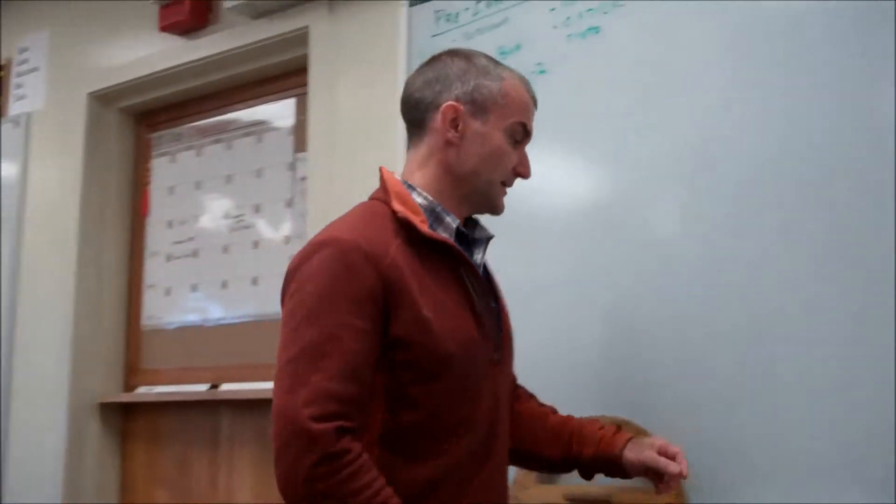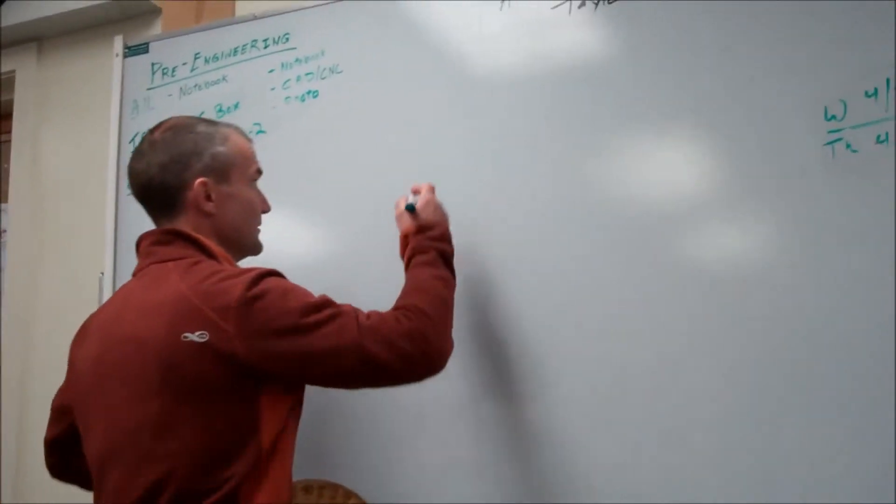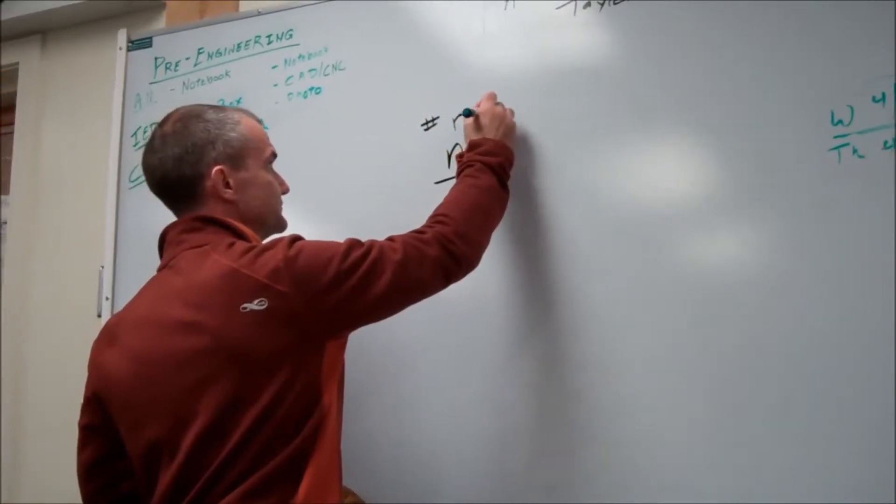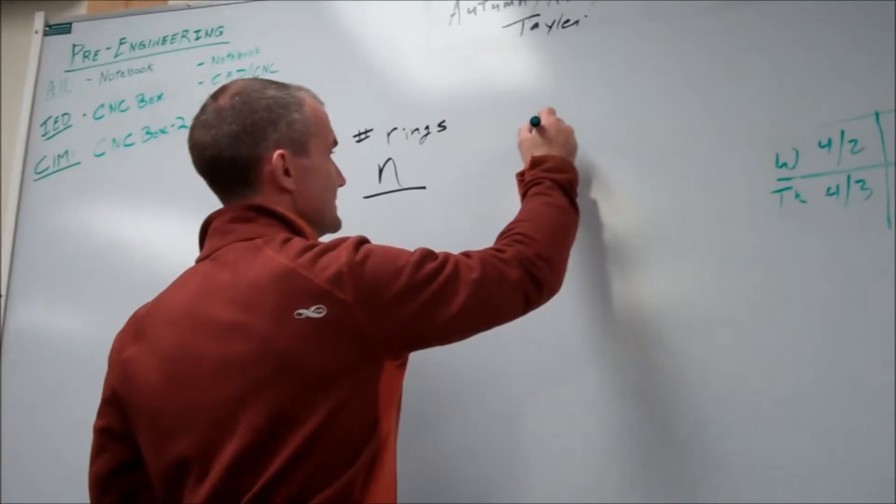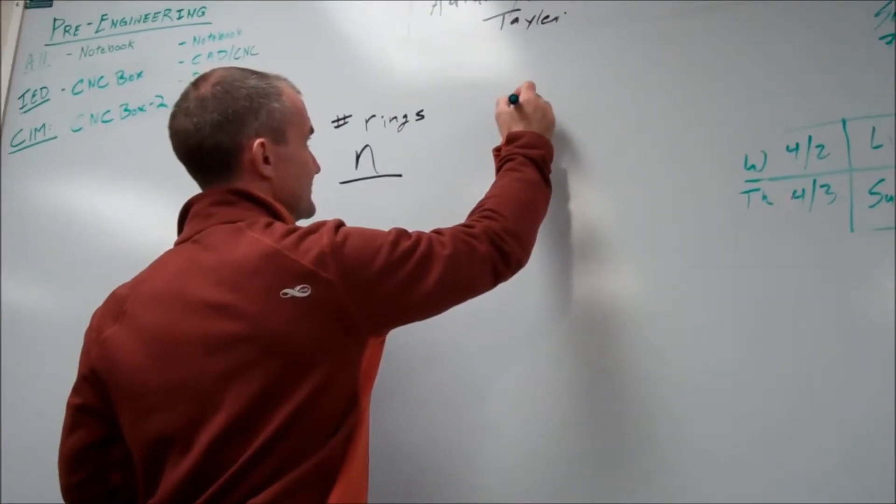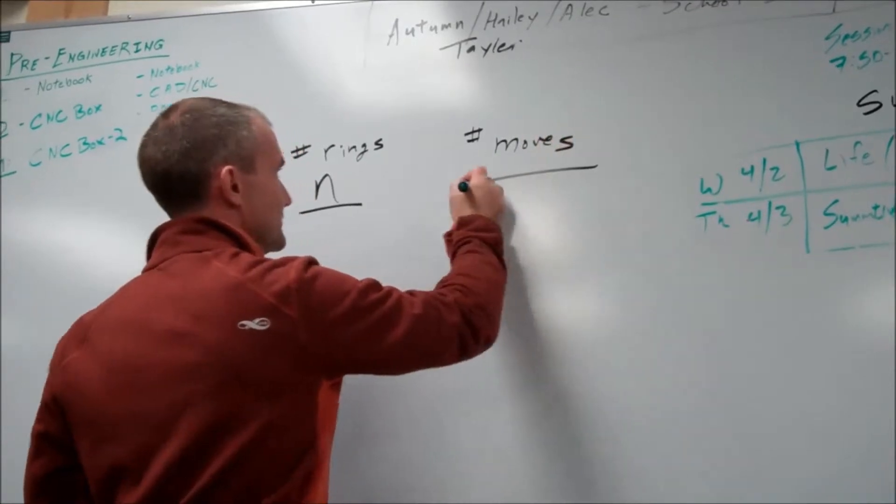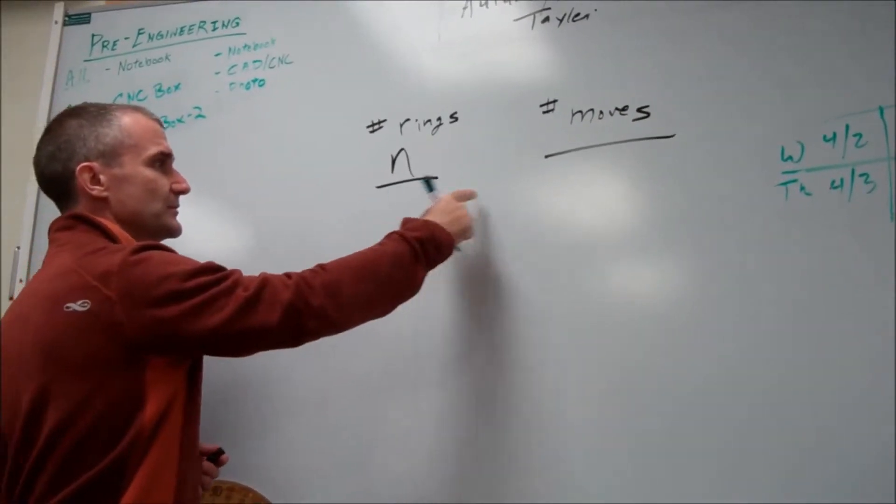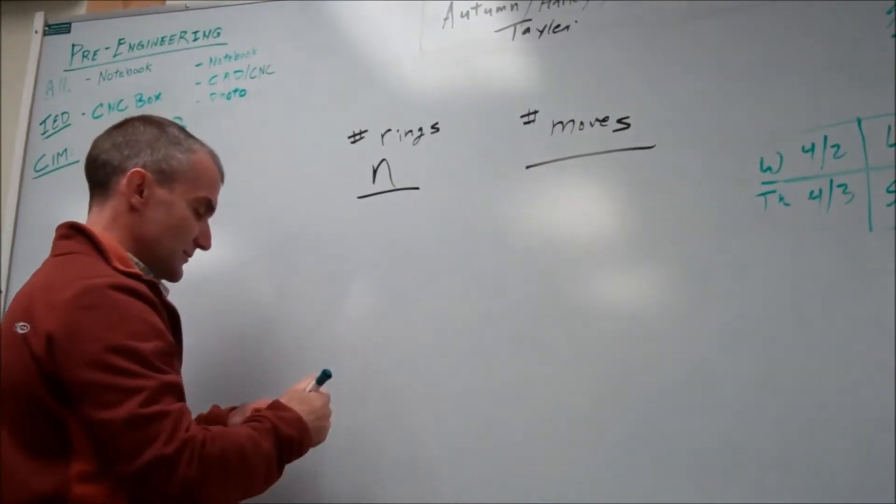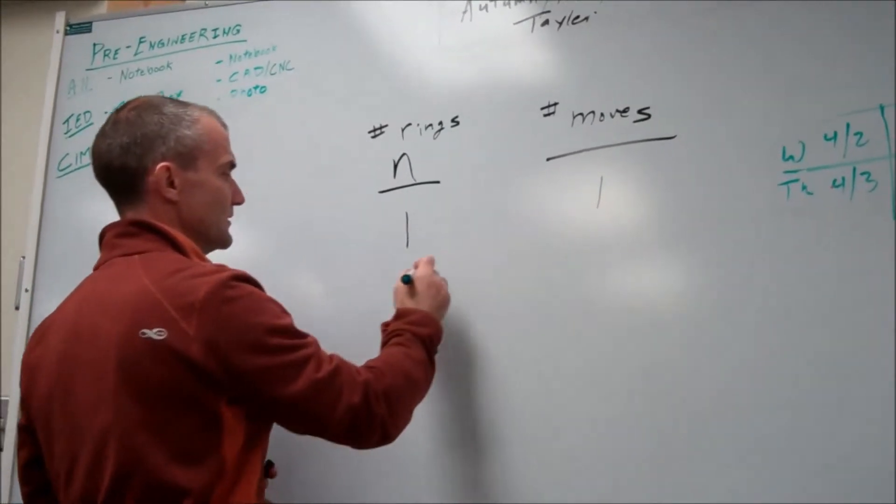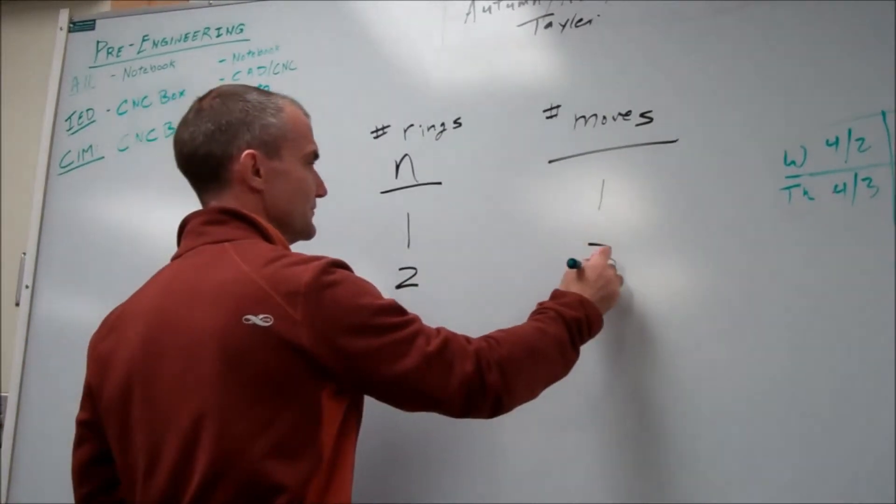So if n is the number of rings in the game, this is number of rings. And then this is how many moves or the number of moves. This would be your x independent variable. This is y your dependent variable. And with one ring we could do it in one move. With two rings we did it in three moves.